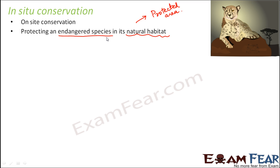Endangered species are those whose numbers are decreasing very fast. For example, human beings number in the billions so the risk of human extinction is very low. But take the Bengal tiger — the number of tigers has decreased so much that only a handful remain in India. Once these few tigers are gone, the species will become extinct forever. Species that are rapidly reducing in number and are close to extinction are called endangered species.